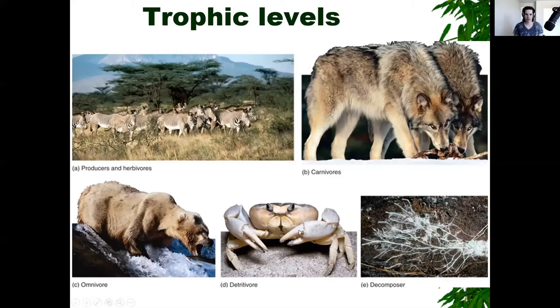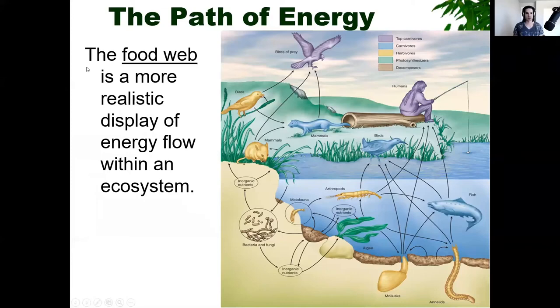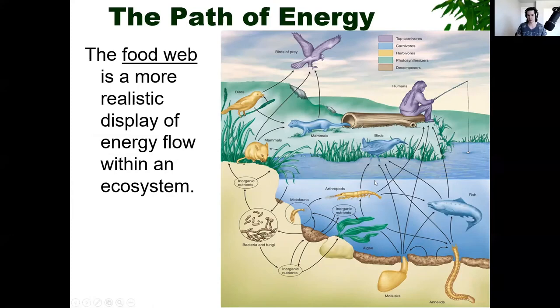A food chain is a simplified view, but what's more realistic is a food web, because some things can be consumed by many other things, and many things consume many other things. Starting with algae as primary producers, which are consumed by arthropods — those arthropods can be consumed by birds or fish, those fish can be consumed by birds, and birds are a pretty big predator picking at everything in the ocean. Many of these things themselves are consumed by humans. A food web is a more accurate depiction than just a food chain.